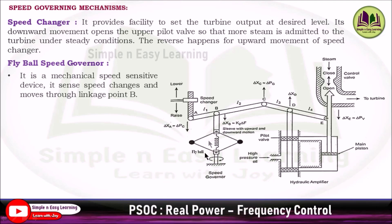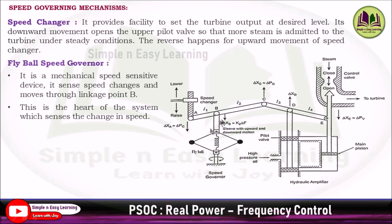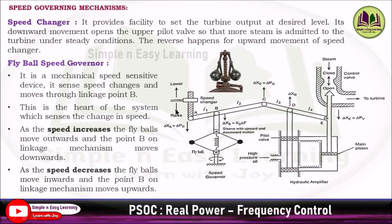The fly ball speed governor is a mechanical speed-sensitive device. It senses speed changes and moves through linkage point B — this is the heart of the system. There are two fly balls. As speed increases, A moves downwards, the fly balls move outwards, and point B of the linkage mechanism moves downwards. As speed decreases, the speed changer moves upward, the fly balls move inwards, and point B moves upwards.